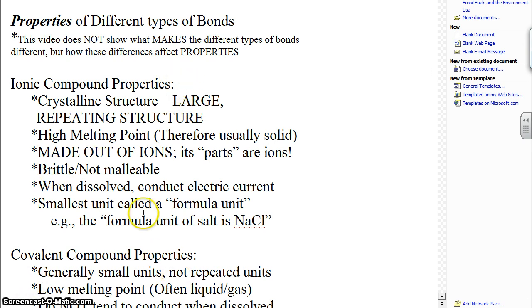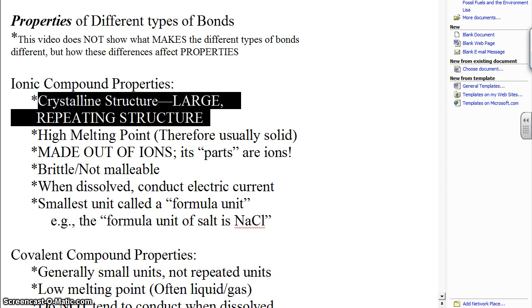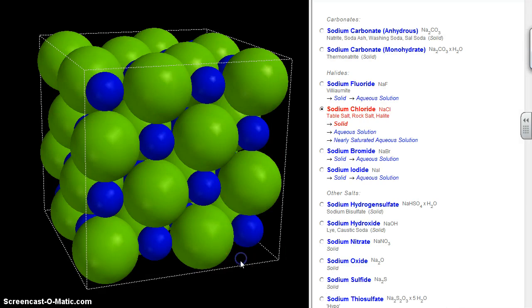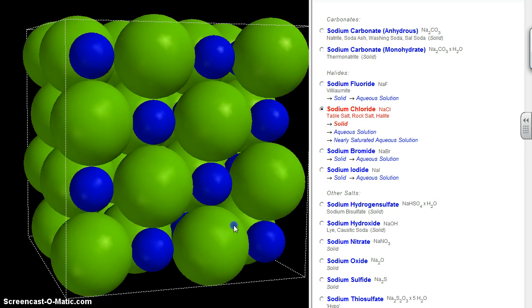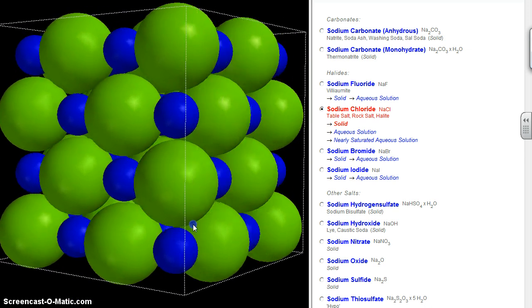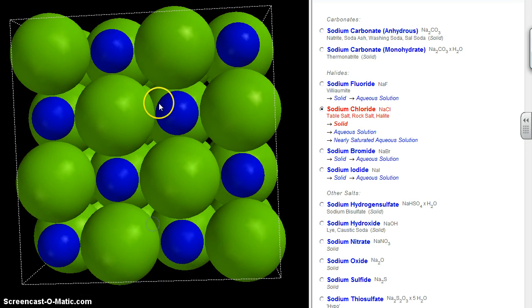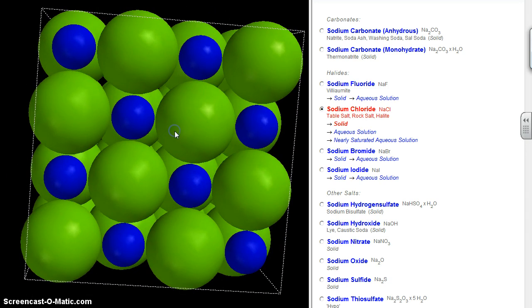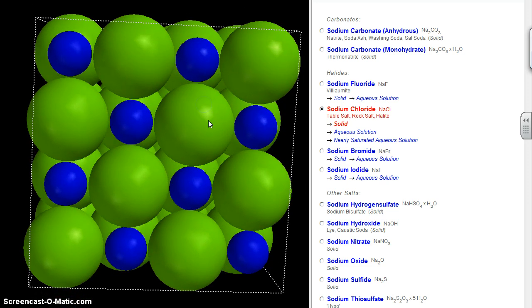We'll start out with ionic compounds. Some properties of ionic compounds: they have a crystalline structure. That is very basic to the idea of an ionic compound, but you probably don't know what crystalline means. It means that it's a large, repetitive structure. Here's an example of an ionic crystal. You'll notice that you have alternating ions, if you remember from the previous chapter, which would tend, if you have ionic compounds, you have positive things with negative things alternating in a pattern.